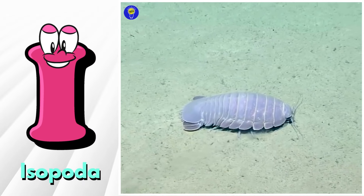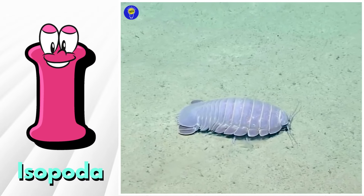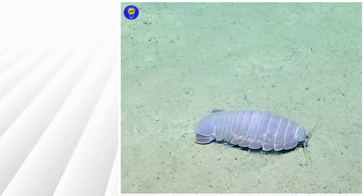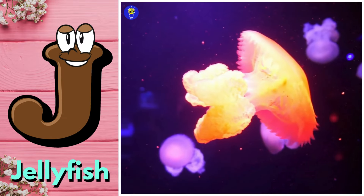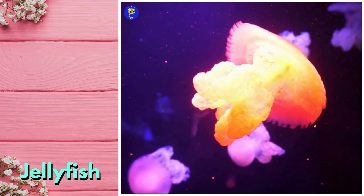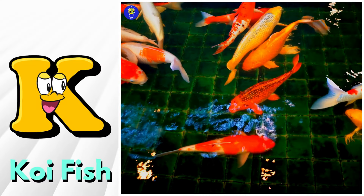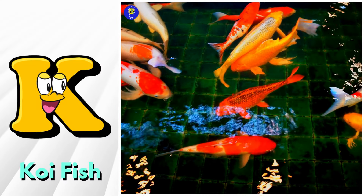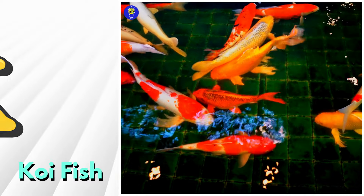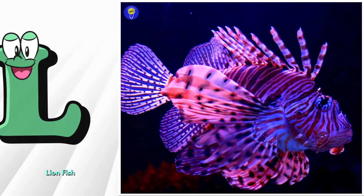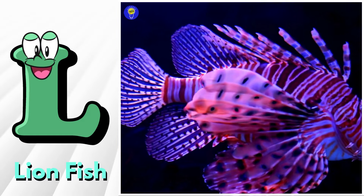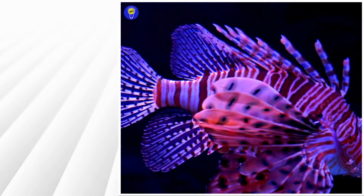I is for isopod. J is for jellyfish. K is for koi fish. L is for lionfish.